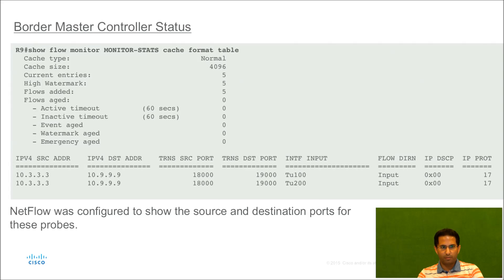A little more about the smart probes. We use the NetFlow configuration on the border master controller, which is R9 in our lab topology. As we can see in this output, the source address is being used as the loopback address of the hub master controller, which is 10.3.3.3. And the destination address of these probes is set to the loopback address of the master controller on the spoke side, which is our R9, and hence it is set as 10.9.9.9.